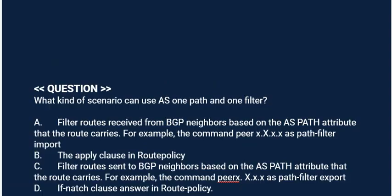Next question: What kind of scenario can use AS-path filter? Option A: Filter routes received from BGP neighbors based on the AS path attribute that the route carries. For example, the command: peer as-path-filter import.